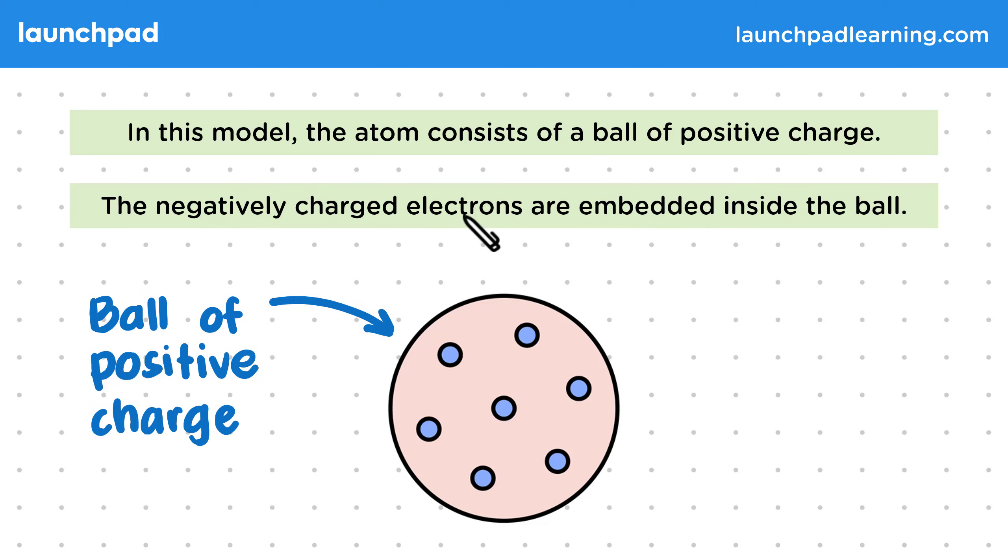The negatively charged electrons are embedded inside the ball. The electrons are arranged inside like plums in a plum pudding, and they're evenly spread out.